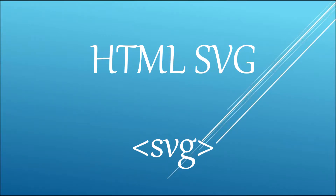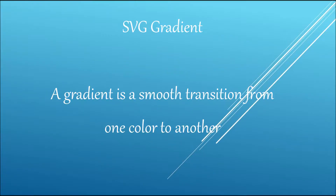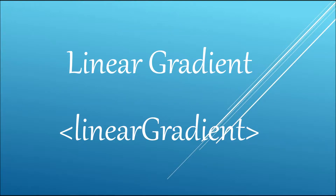Hello everyone, in this video I'll be talking about gradient. I'll discuss two types: first linear gradient and then radial gradient. Basically, a gradient is moving from one color and smoothly to another.